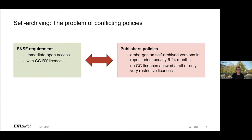When you publish in a subscription journal, it will happen quite often that you run into a problem with conflicting policies when it comes to open access self-archiving. The SNSF requirement is that your articles are made open access immediately with a CC BY license. However, most scientific publishers have self-archiving policies that require embargoes. Usually, you are only allowed to release a self-archived accepted version of your article after a certain period of time, and often only without a license or with a more restrictive license than what the SNSF requires.